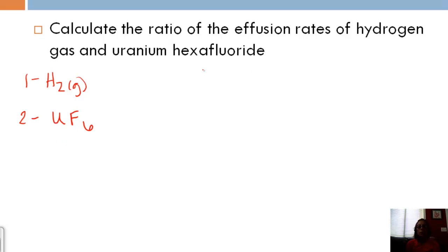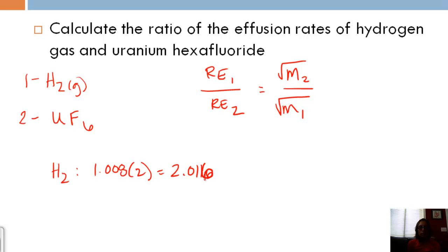Well I know that in order to find the rate of effusion of gas one divided by the rate of effusion of gas two, because that's my ratio, that's equal to the square root of the molar mass of gas two divided by the square root of the molar mass of gas one. So I need molar masses for each of these. So let's do H2. I know that the atomic mass is 1.008 times two, gives me 2.016.